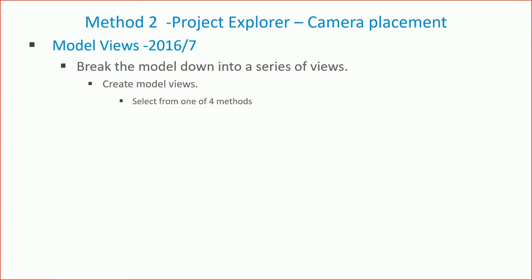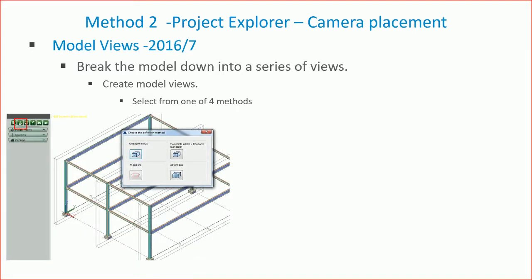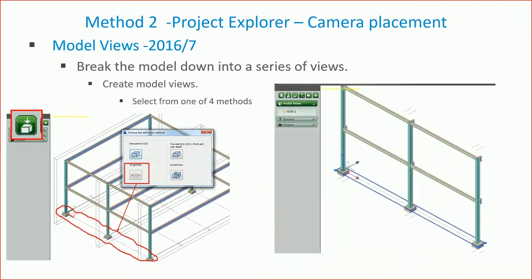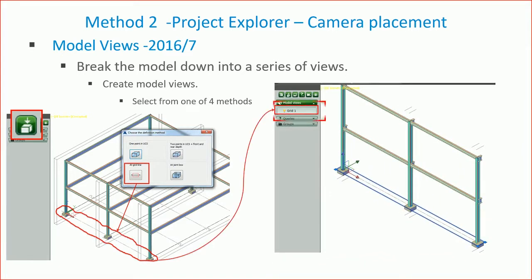Using model views, you use the Project Explorer — press the button on the home ribbon tab, first button on the left. Press it and select model view; it comes up with four options: grid line, one point UCS, one UCS depth front and rear, and a joint box. Each has slightly different parameters, but fundamentally they create a box or view that you can see around in the model, turning off certain elements so you can isolate particular areas.